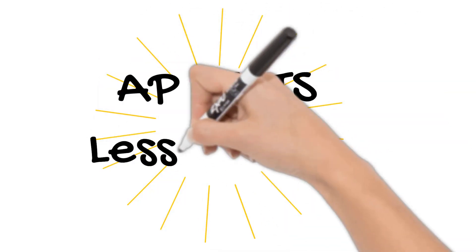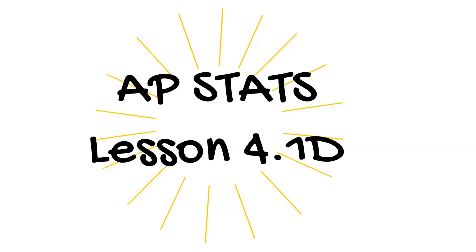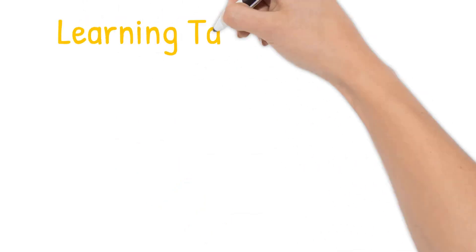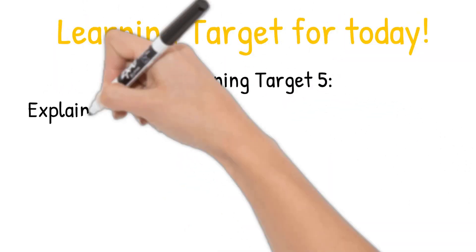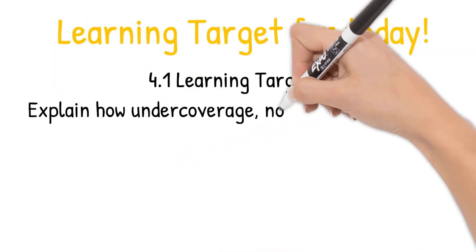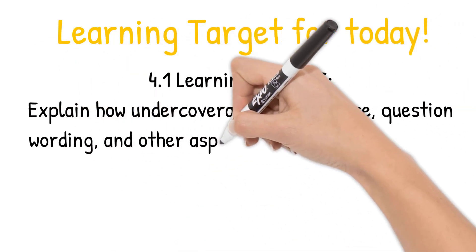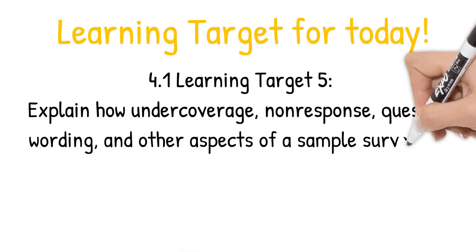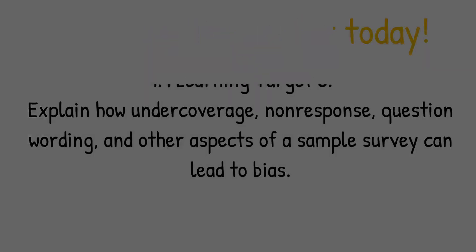Hi, this is Marina. Welcome to APSATS Lesson 4.1-D. Our learning target for today is 4.1 number 5: explain how under coverage, non-response, question wording, and other aspects of a sample survey can lead to bias.